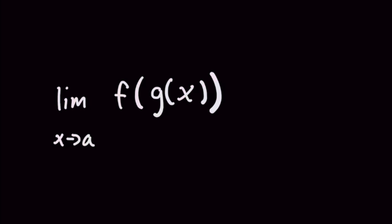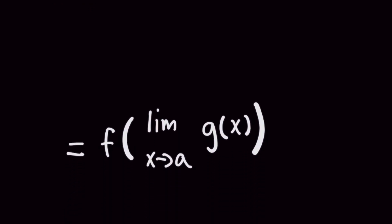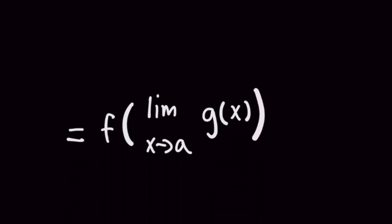What this is saying is that when f and g are specifically continuous everywhere then this limit is the same as evaluating the f function after finding the limit as x approaches a of this inner g of x function.